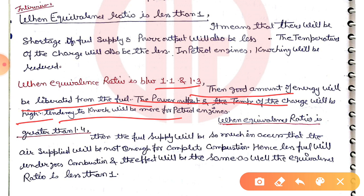When the equivalence ratio is greater than 1.4, the fuel supply is so much in excess that the air supplied is not enough for complete combustion. This leads to incomplete combustion, similar in some effects to the lean mixture condition.